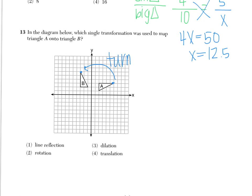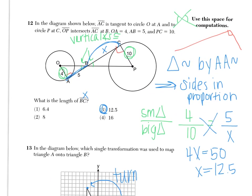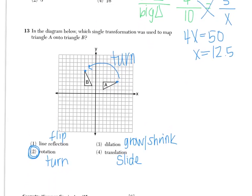And in order to think about a turn, we must think about a rotation. The key word for a line reflection is a flip. Rotation, of course, as we just said, is a turn. Dilation is a grow or shrink. And a translation is a slide. So answers for this page, we have number 12 is choice 3, and number 13 is choice 2.